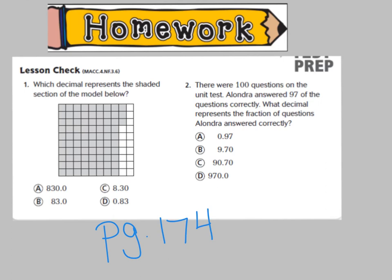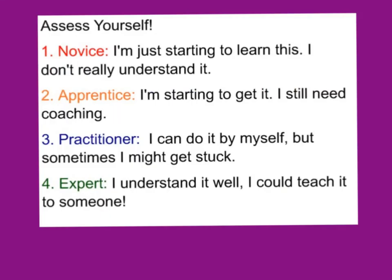Alright friends, we're going to start on our homework. It's on page 174 in your GoMath book — only numbers 1 and 2. When you're done, go ahead and assess yourself: level 1 novice, level 2 apprentice, level 3 practitioner, or level 4 expert. I hope you have a good night and we will see you tomorrow in class. Bye!